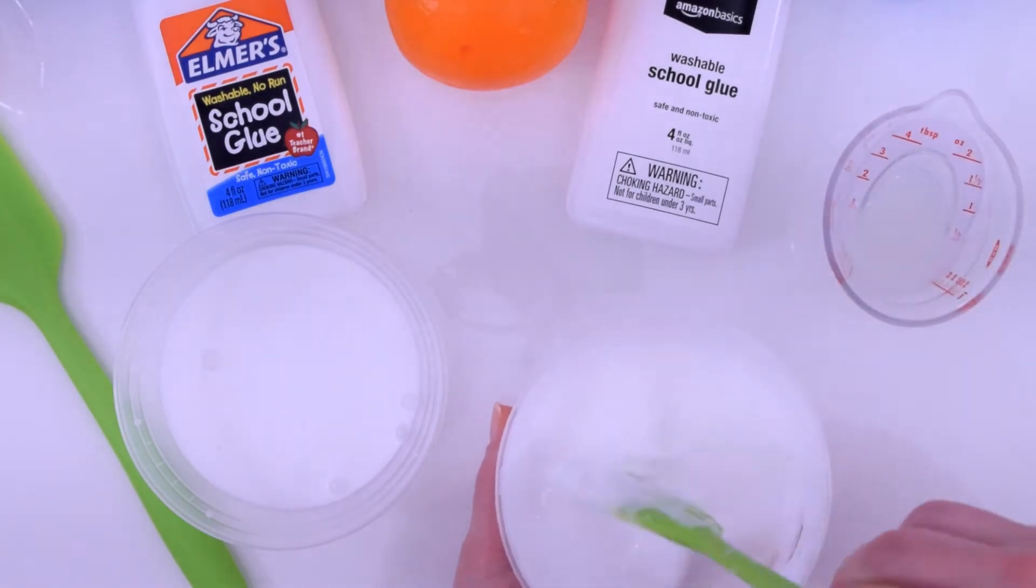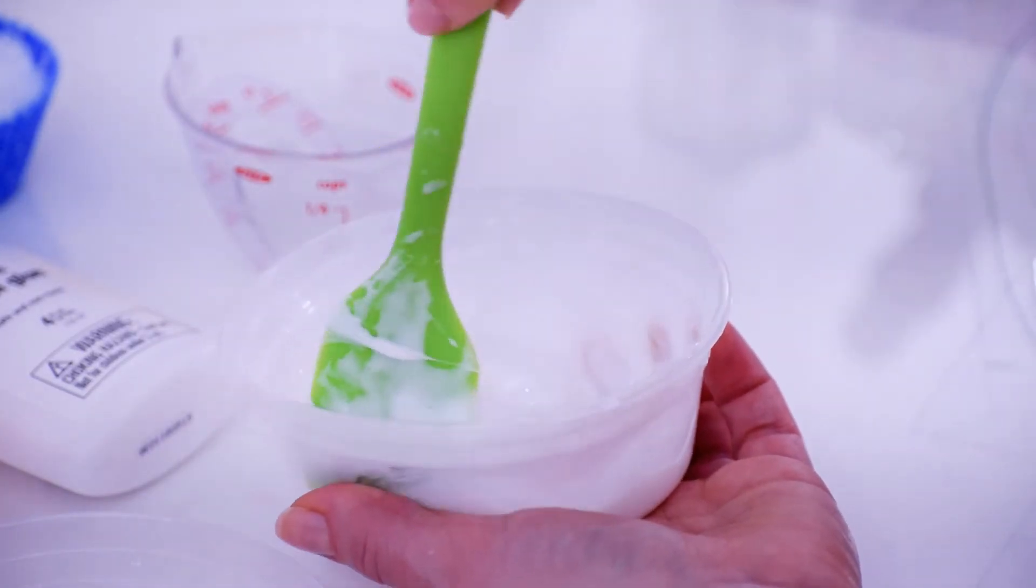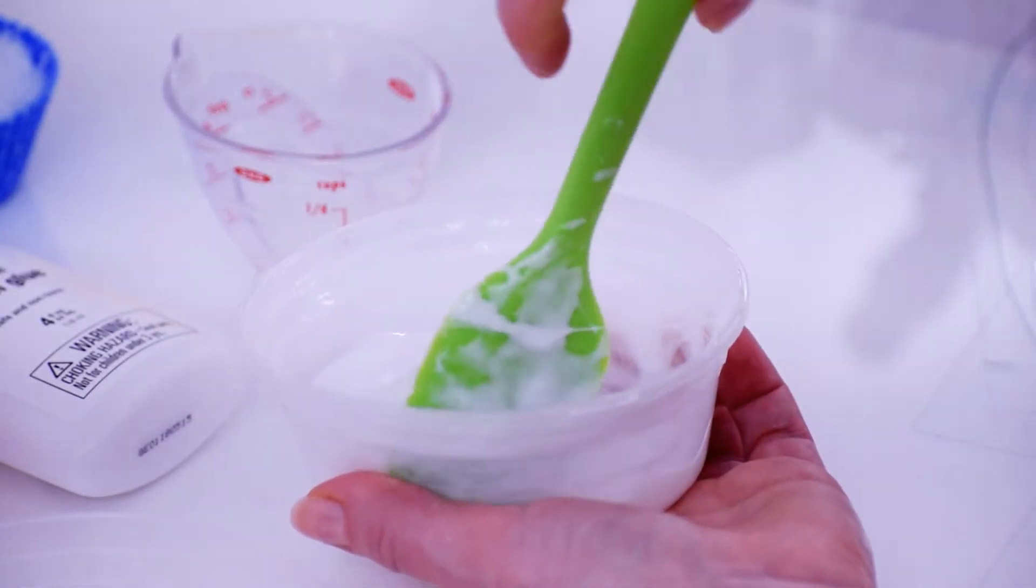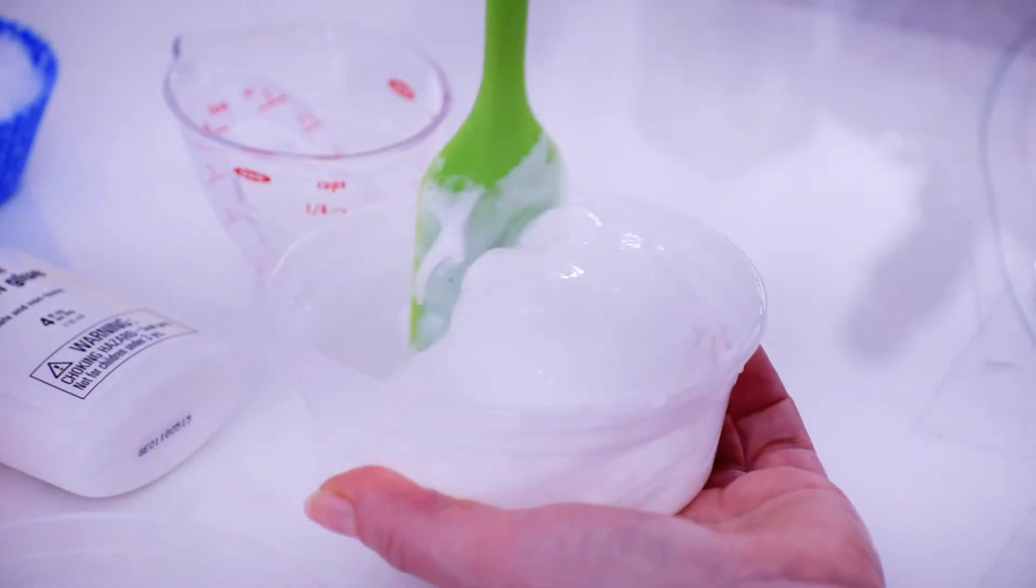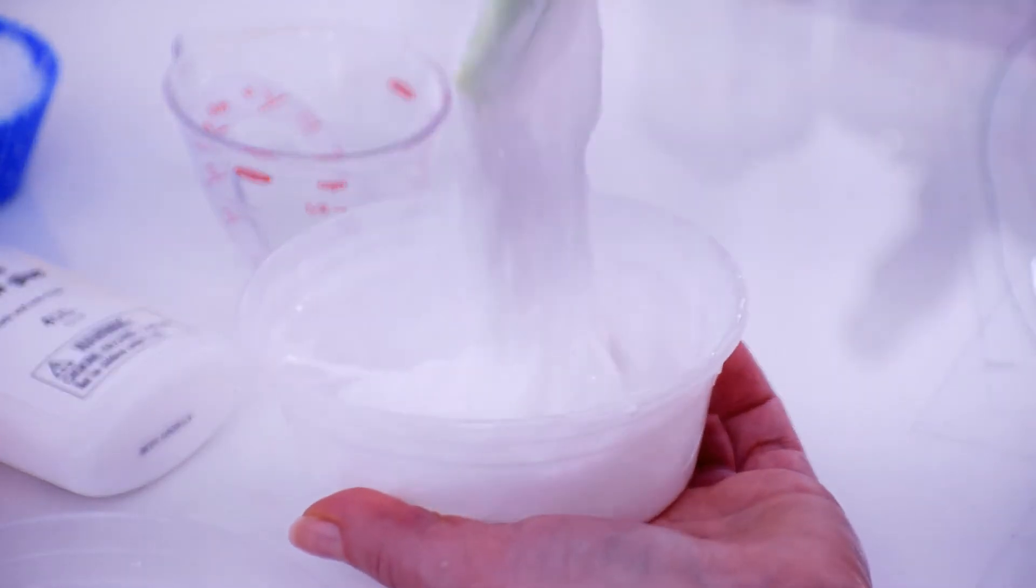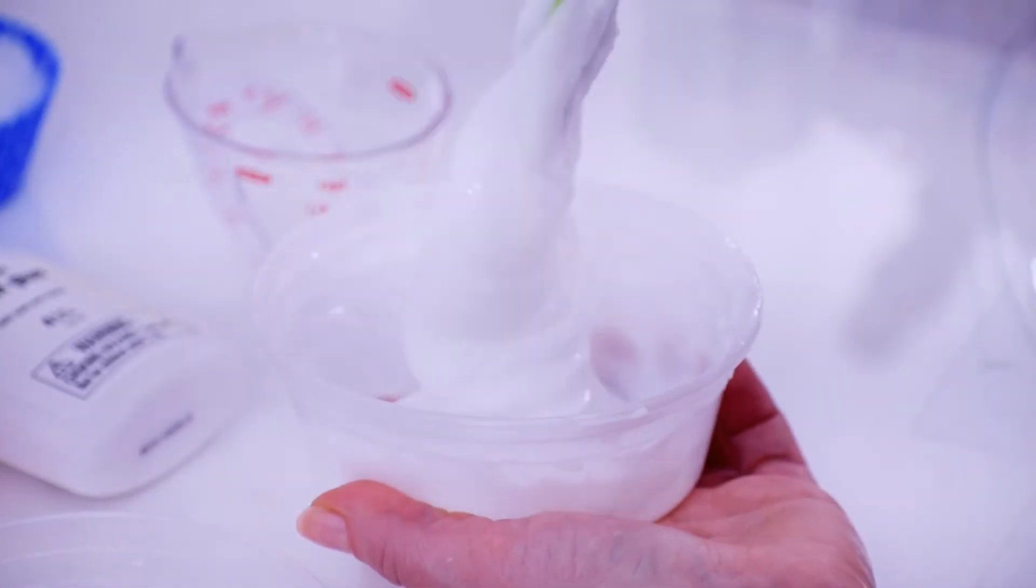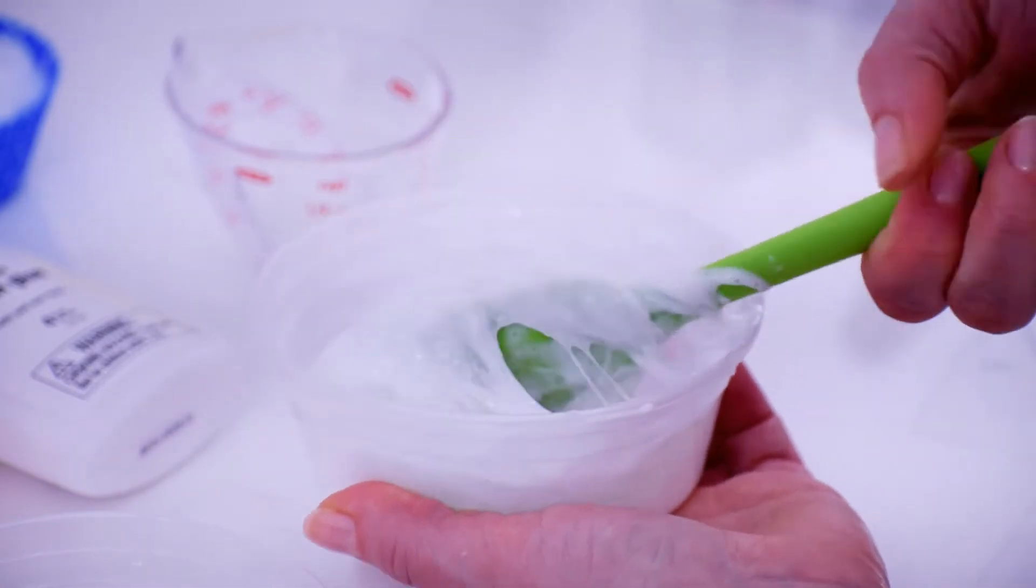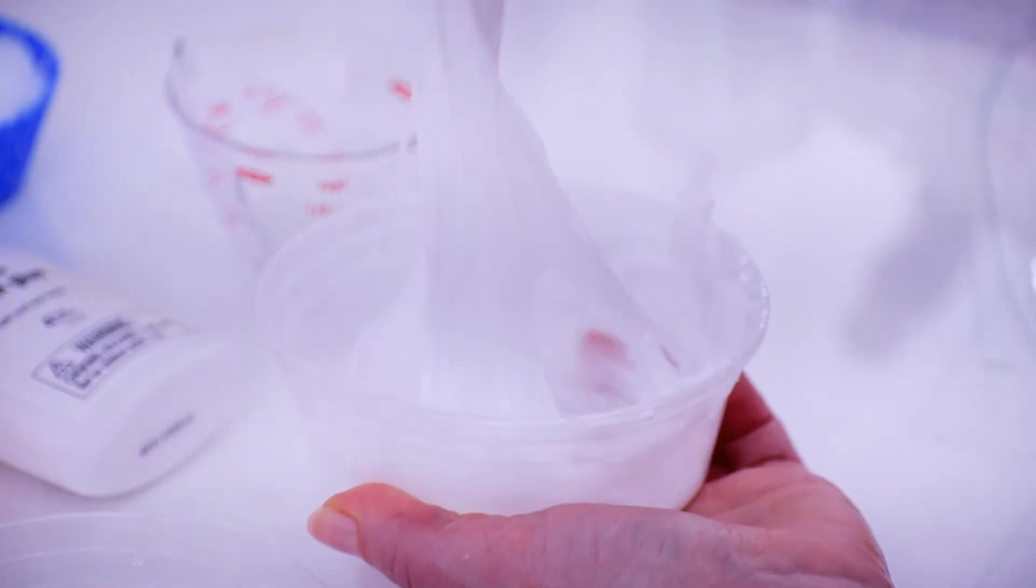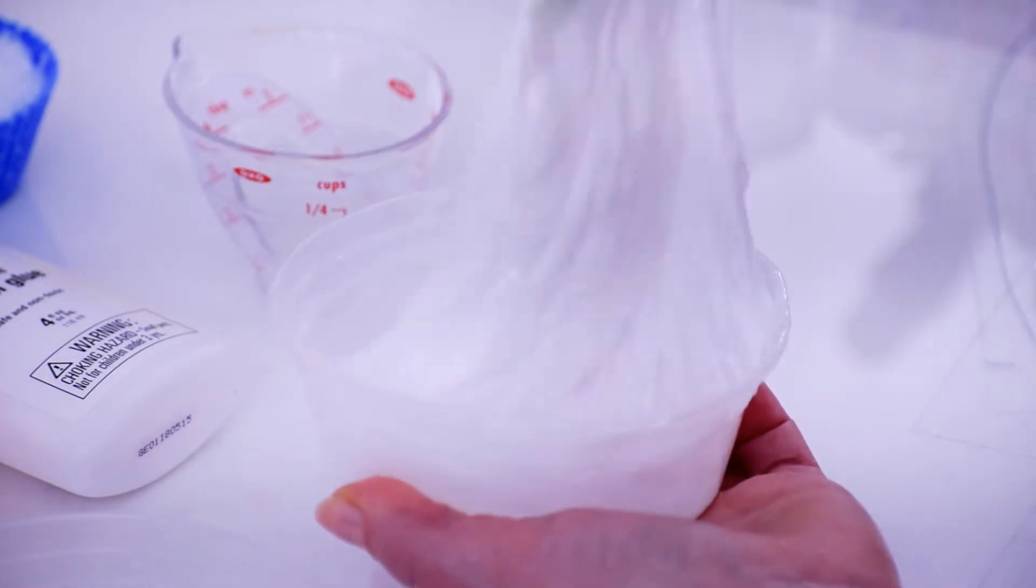So far I have put in about two tablespoons of Sta-Flo into this slime glue for Amazon, and I'd say the likelihood is it's probably about three ounces, three and a half ounces of the glue, because there's always some that are still left in the glue bottle.